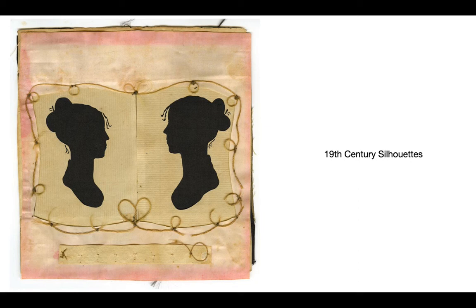These were made to commemorate an absent figure, present both before photography and persisting even after. They become emblems of power and privilege — a mode of art making concurrent with the antebellum South and the history of slavery, which rotates around that and finds itself located in this mode of image making.